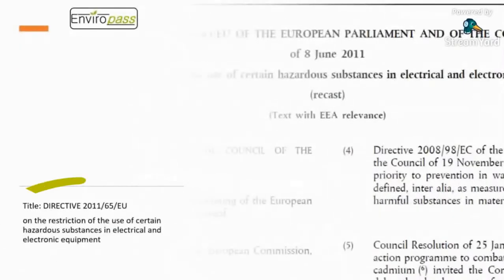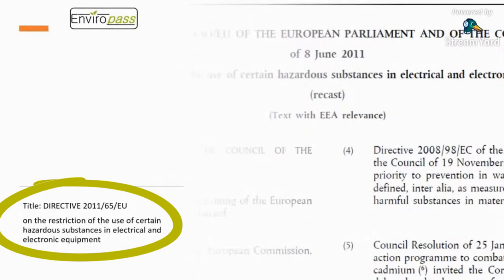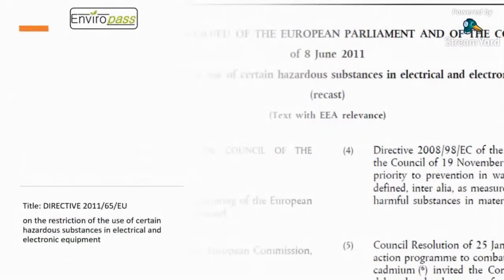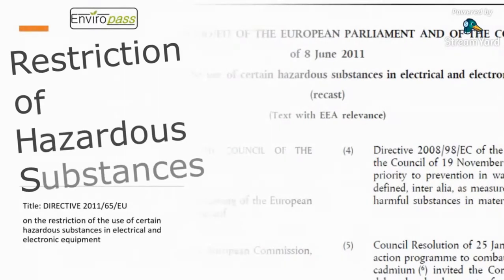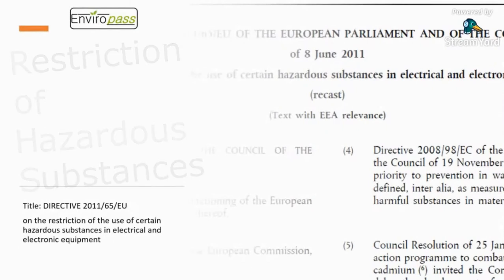Directive 2011-65-EU is called the Directive on the Restriction of the Use of Certain Hazardous Substances in Electrical and Electronic Equipment. That's where the acronym RoHS comes from: R for Restriction, O for 'of', H for Hazardous, S for Substances — R-O-H-S.